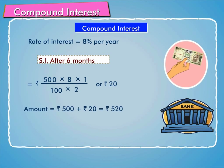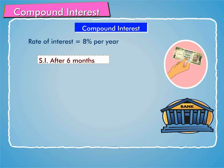Next time, after 6 months, the interest will be calculated on Rs. 500 plus 20, or Rs. 520. This interest will be Rs. 520 into 8 into 1 by 100 into 2, or Rs. 20.80.